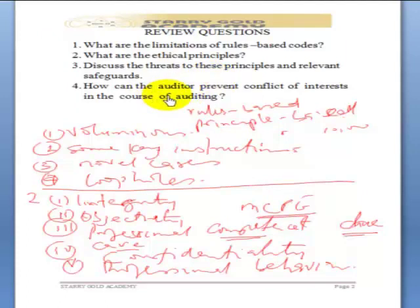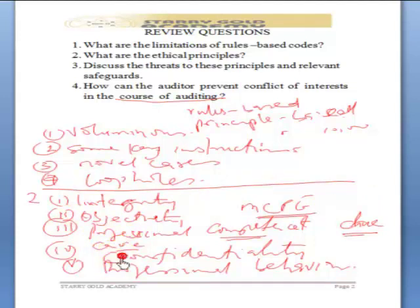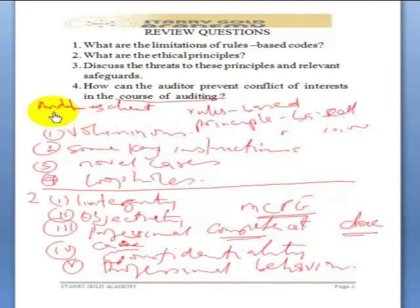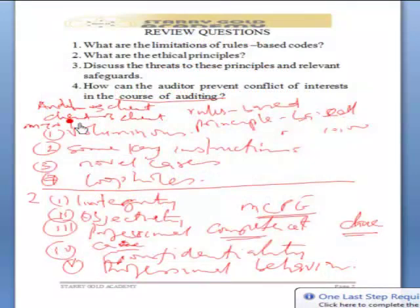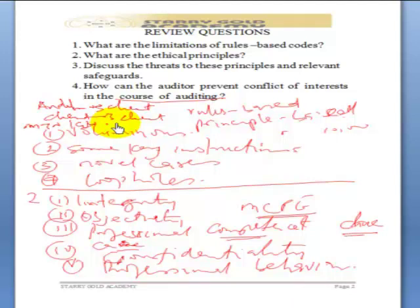Now, the next question says: how can the auditor prevent conflict of interest in the course of auditing? Conflict of interest could occur — either between the auditor and the clients, or you can have client versus client. For example, if an auditing firm is auditing MTN and GLO at the same time, this is going to be a very serious issue because conflict of interest could occur.